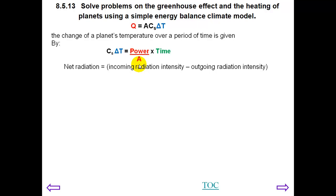You need to find the net radiation. So what is this temperature change? Delta T divided by CS equals power divided by area, in other words intensity times time divided by CS.